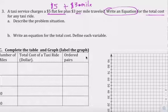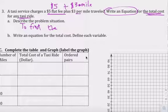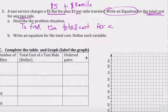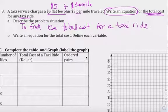So describe the problem situation. You're finding the total cost for the taxi ride. Okay, the problem situation is to find the total cost for a taxi ride. Okay, sorry for the chicken scratch. Write an equation for total cost. Define each variable.